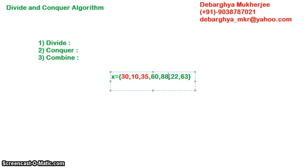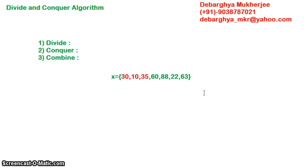Our target here is to find the maximum number among these numbers. We will try to divide our sample data to a size that is so trivial for the solution — meaning we divide the entire set of data into such a small size where finding the solution from that sample data is really very easy.